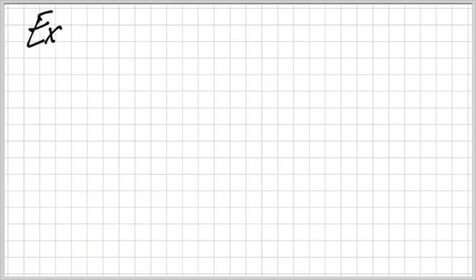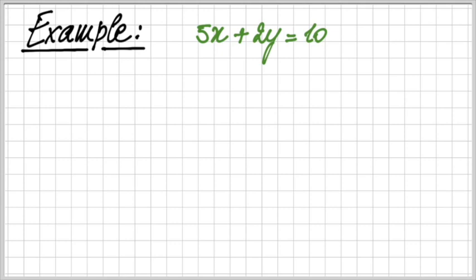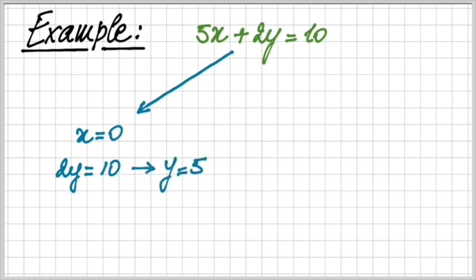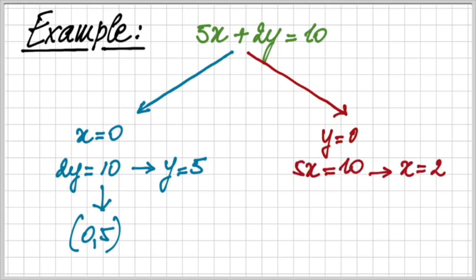Let's have a look at an example. I have the equation 5x plus 2y is equal to 10. And we can say that for the y-intercept x is equal to 0, we find 2y is equal to 10, and y is equal to 5. So we find the y-intercept given by the coordinates 0 and 5. We do the same for the x-intercept, y is equal to 0. So we can rewrite the equation as 2x is equal to 10, or x is equal to 2, which gives us the x-intercept, which has the coordinates 2 and 0.